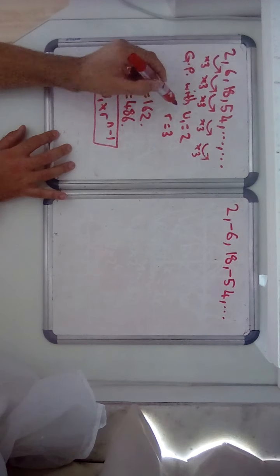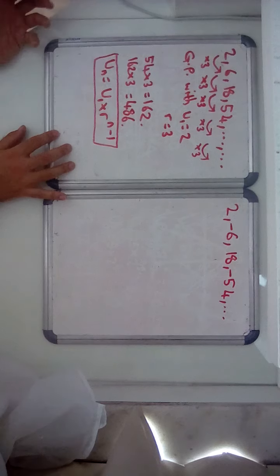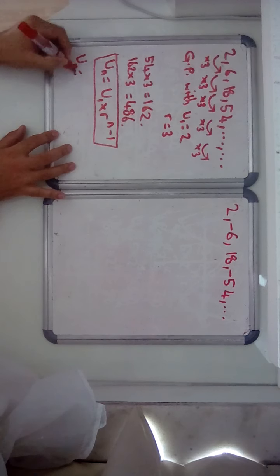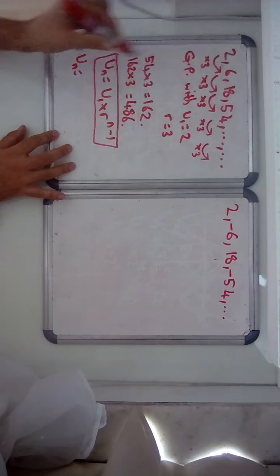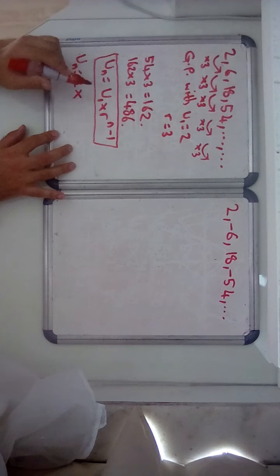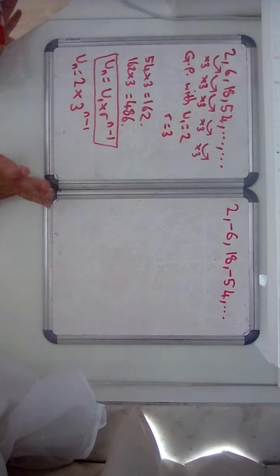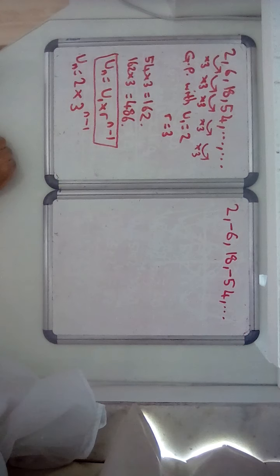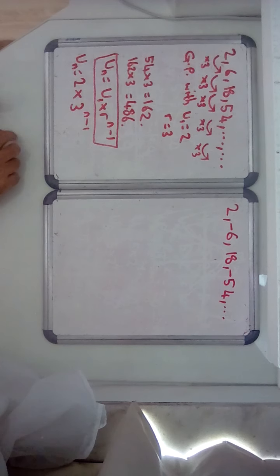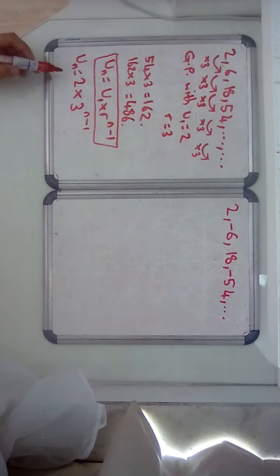We already have u1, we already have r, so un equals u1, which is 2, times r, which is 3, to the power n minus 1. And that's it. It looks like it's not finished, but there is absolutely no need to do more things with it.